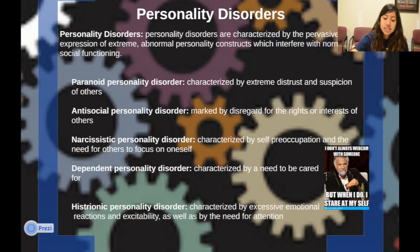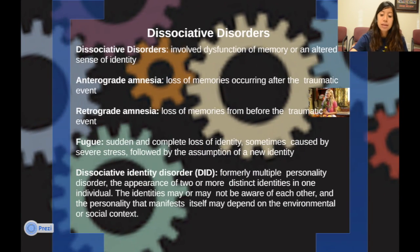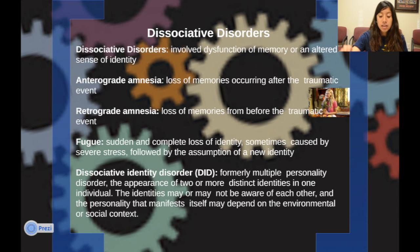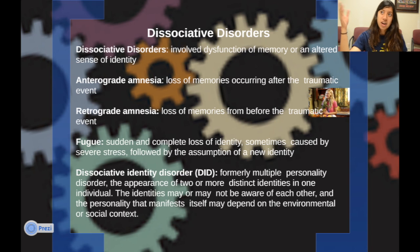Now we're looking at dissociative disorders, which involve dysfunctions of memory or an altered sense of identity. Anterograde amnesia is the loss of memories occurring after a traumatic event. Retrograde amnesia is the loss of memories from before the traumatic event. A good example is the movie 50 First Dates, where the main character suffers from anterograde amnesia because she can't retain new memories after getting into a car accident.